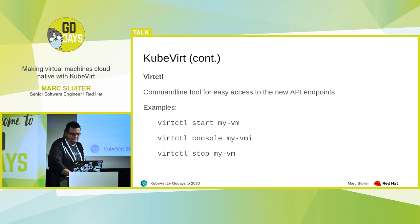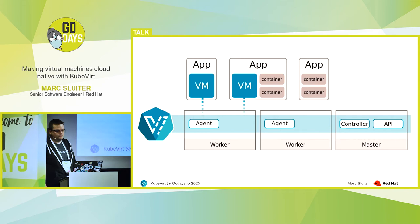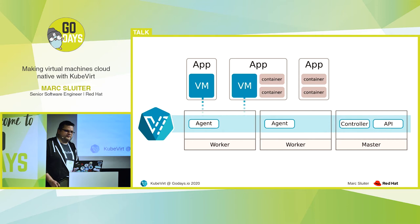This is a very simplified overview. We have the virt controller and virt API, which are running once or twice in our HA setup. Then we have the virt handler, which is running on each worker node, and that one is together with the virt launcher, launching the VMs. And the VMs are just running together with other containers in the same cluster in the end.